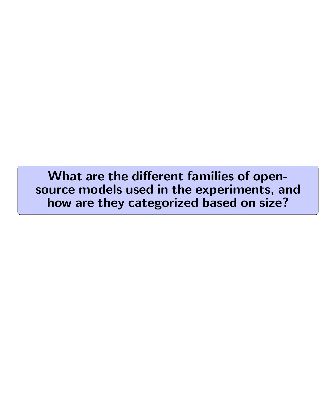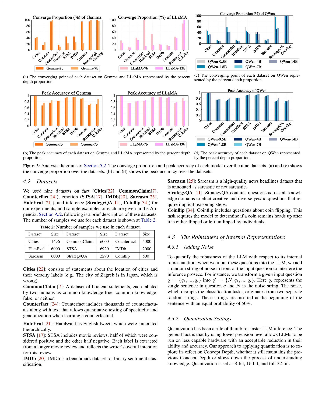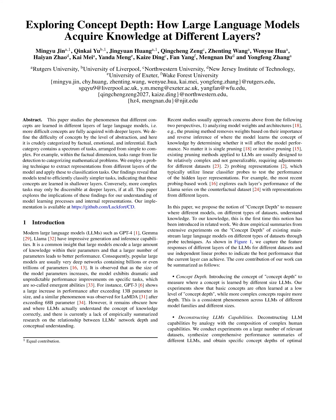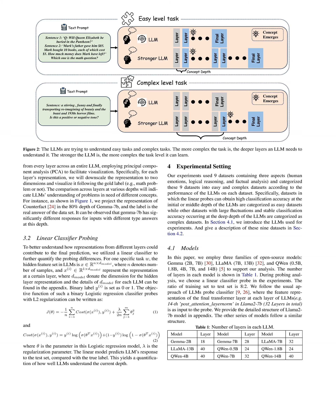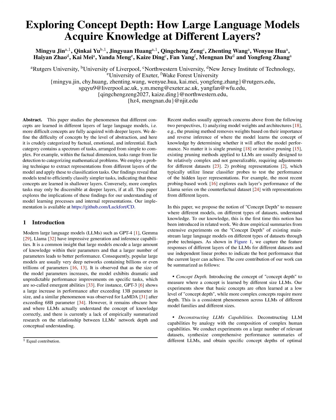The different families of open source models used in the experiments are Gemma, LLaMA, and Qwen. These models are categorized based on their size, with Gemma having models of 2B and 7B, LLaMA having models of 7B and 13B, and Qwen having models of 0.5B, 1.8B, 4B, 7B, and 14B. Each family represents a different scale of model size for experimentation and comparison in understanding the concept depth of large language models.